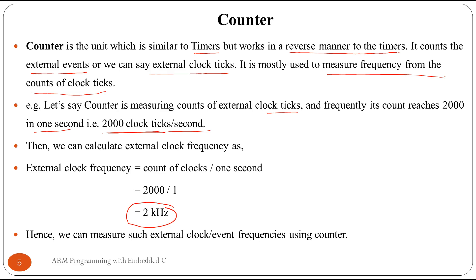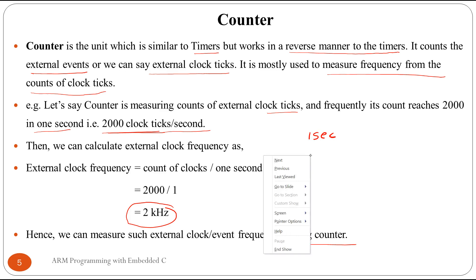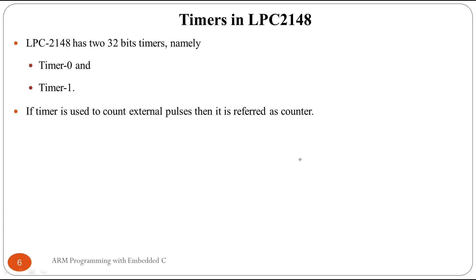We can measure external signal frequencies using a counter by enabling the internal timer to generate a one-second delay and checking how many clock ticks are received. If 2000 ticks are received in one second, the frequency is 2 kilohertz; if only 100 ticks are received, the frequency is 100 hertz.